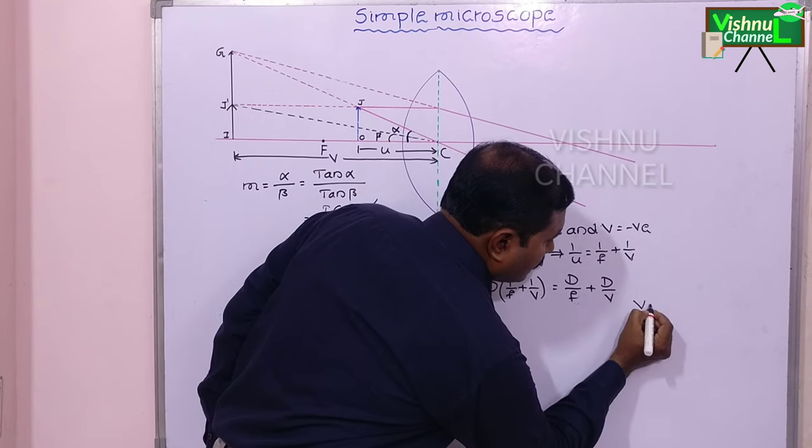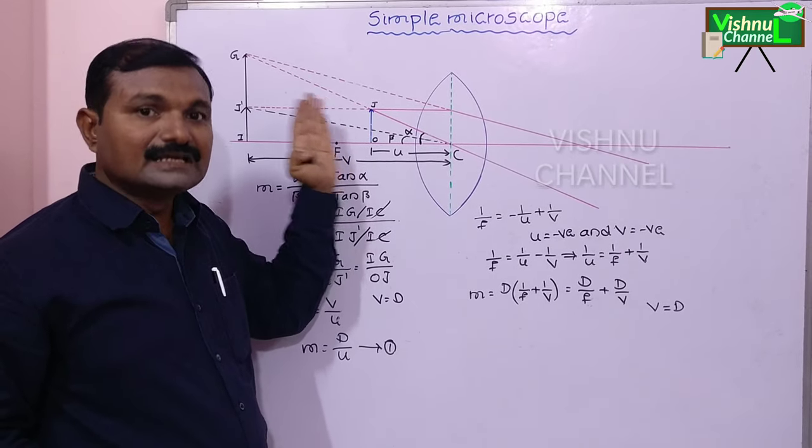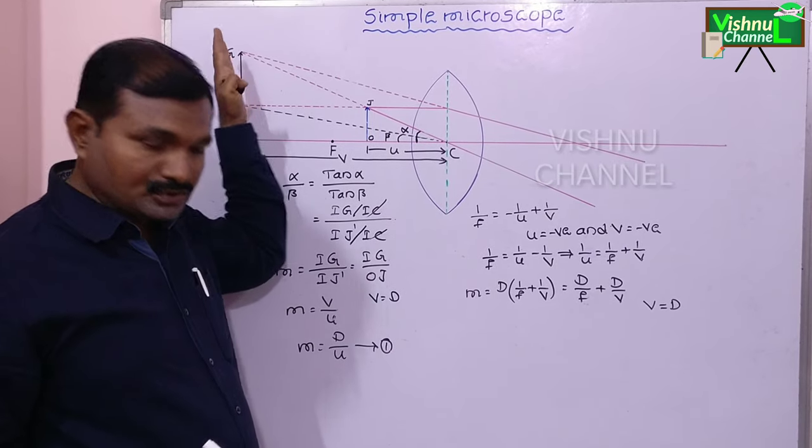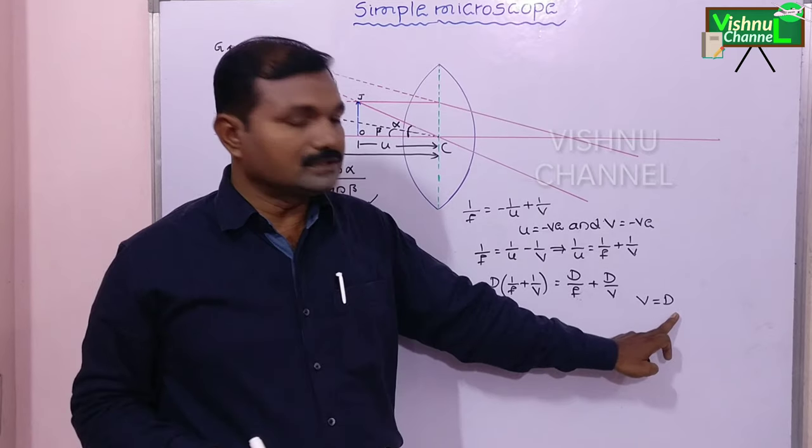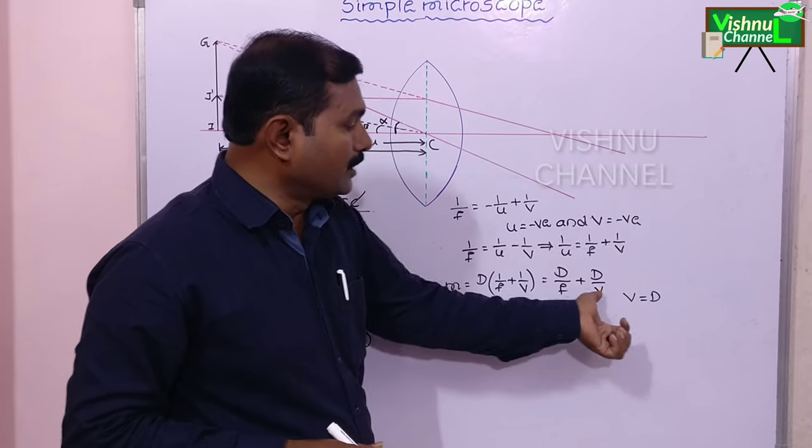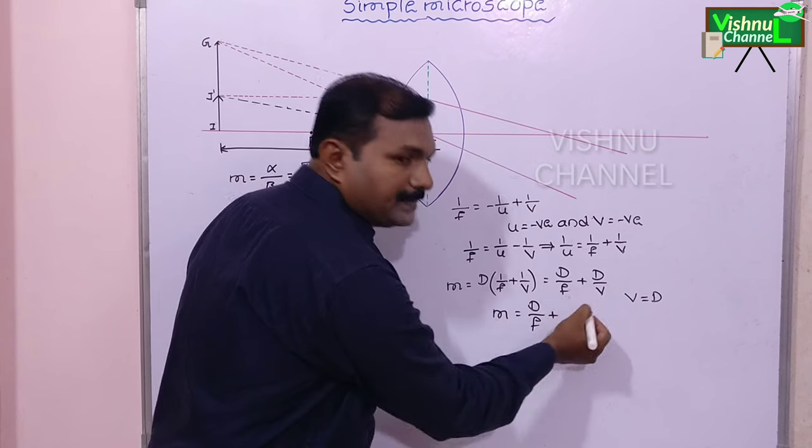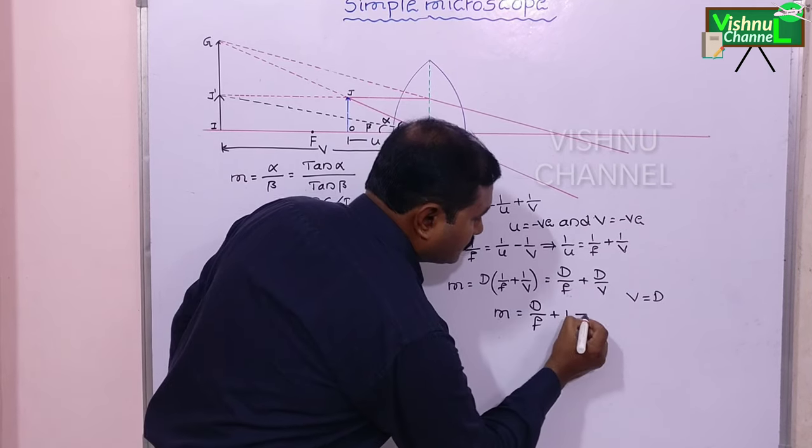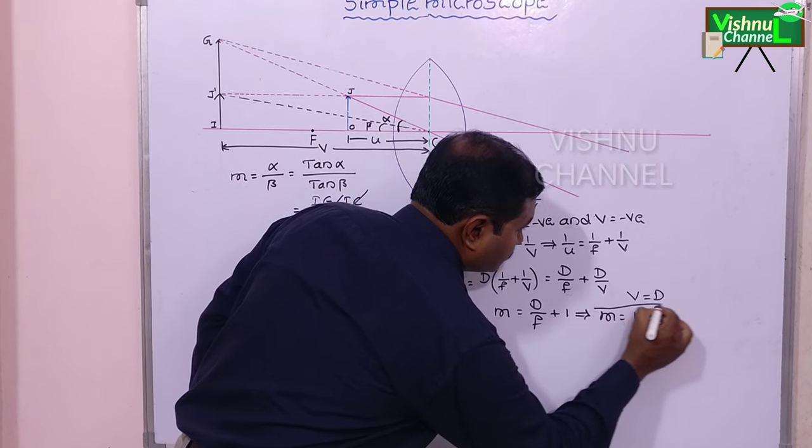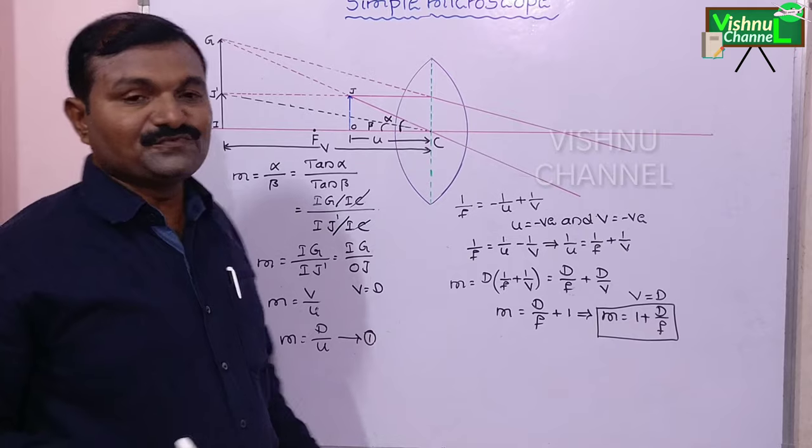If the image is formed at least distance of distinct vision, at that time v value is approximately equal to d. For humans d value is 25 centimeters. So v equal to d. Then m is equal to d by f plus d by d, and that is one. So m is equal to 1 plus d by f. This is one equation.